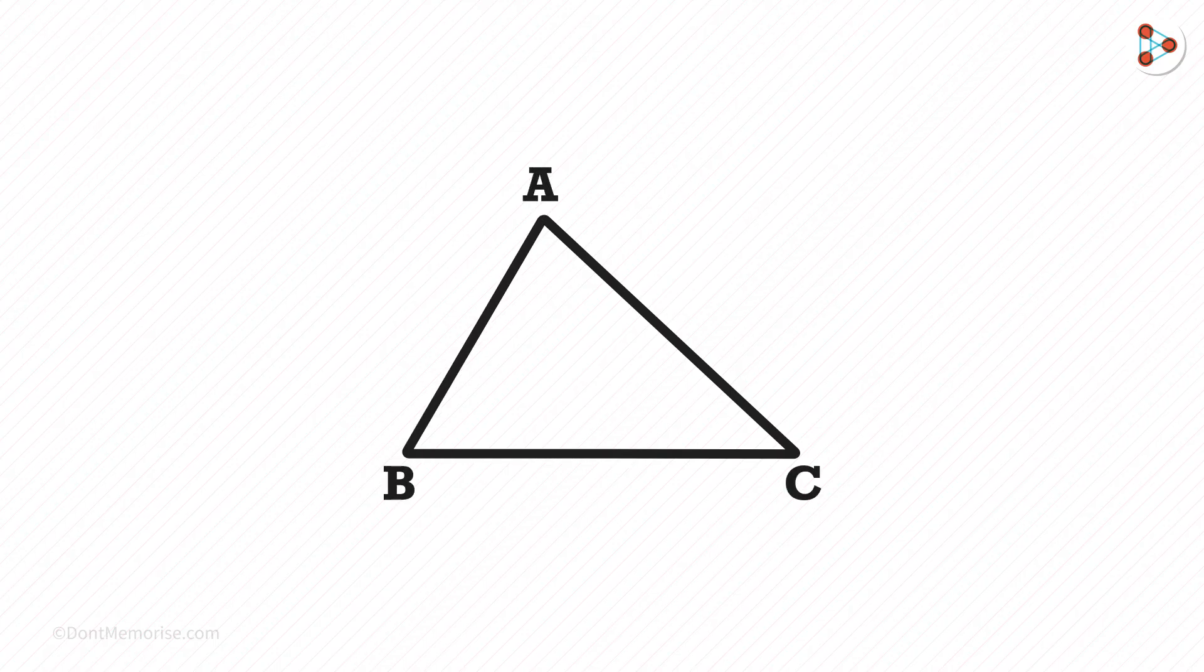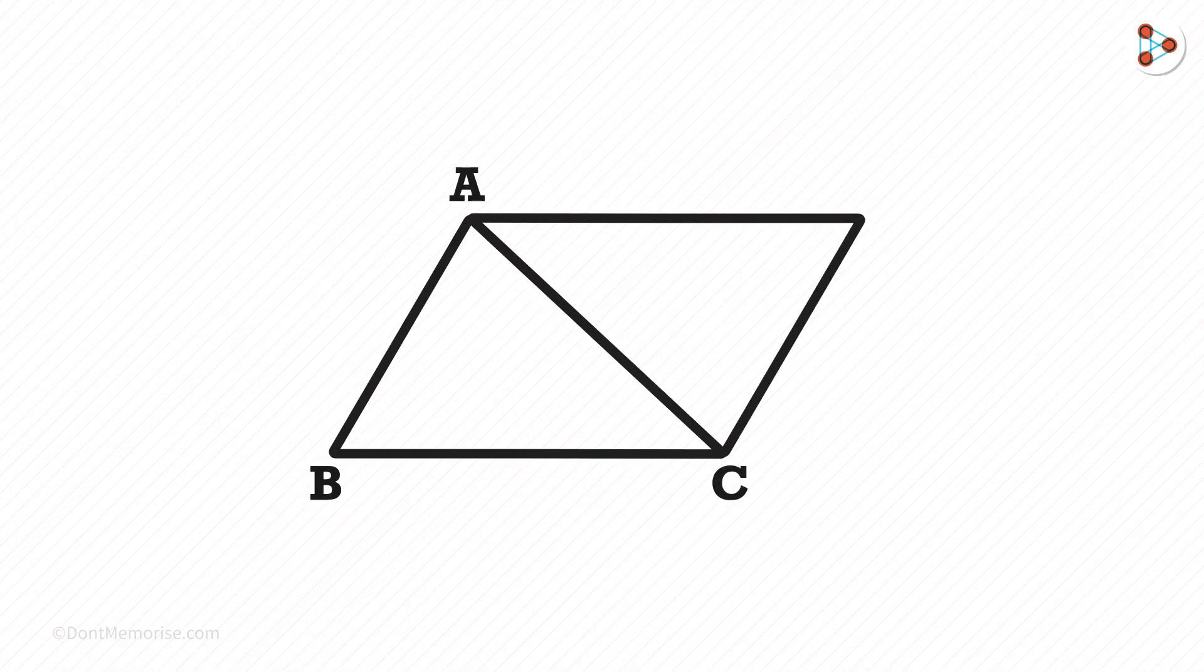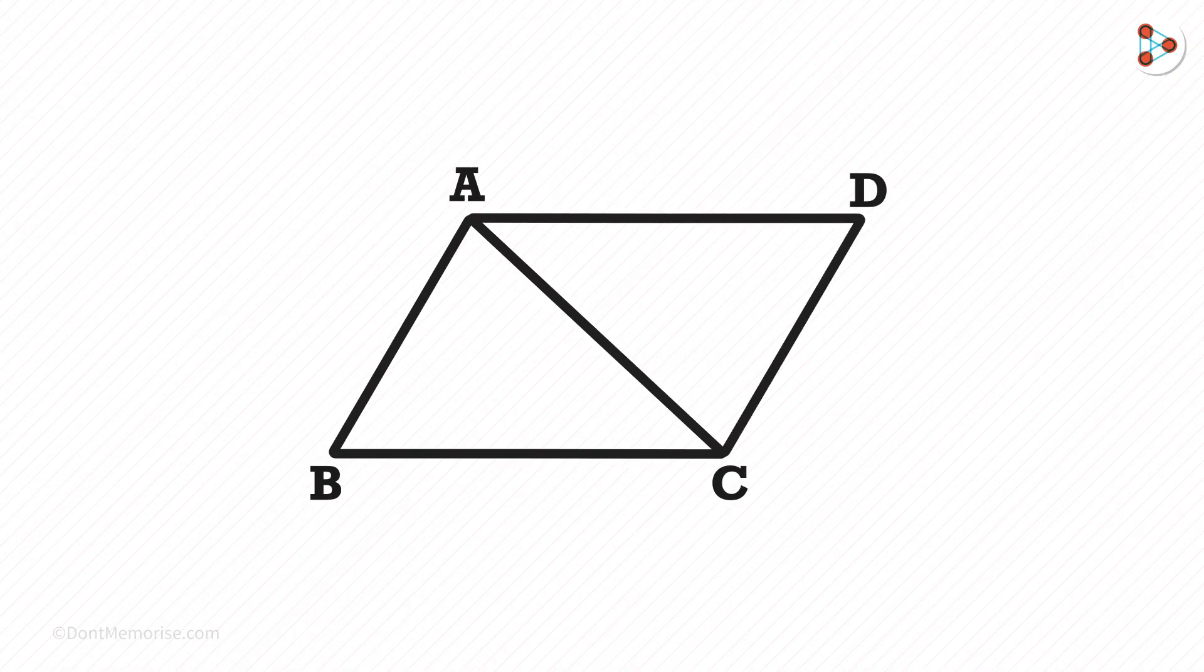Here's our triangle ABC. Now let's draw a congruent triangle here and then we place it here. We will name this point D. So both the triangles are congruent to each other. It means both the triangles are the same.